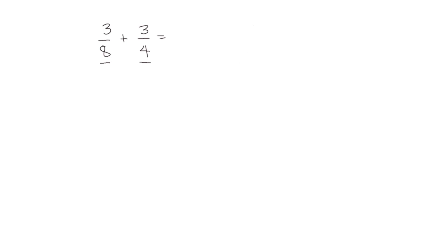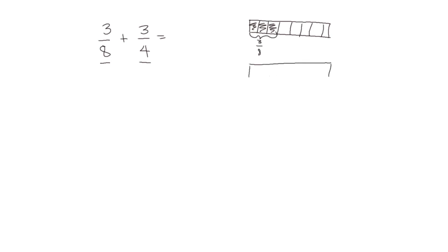We're going to look at what this looks like as a tape diagram. Take the first fraction, 3/8 — we're going to divide our whole into 8ths and shade 3 of them. Then our second fraction is 3/4, so we'll start with one whole the same size as the first one, and we'll divide it into 4ths.